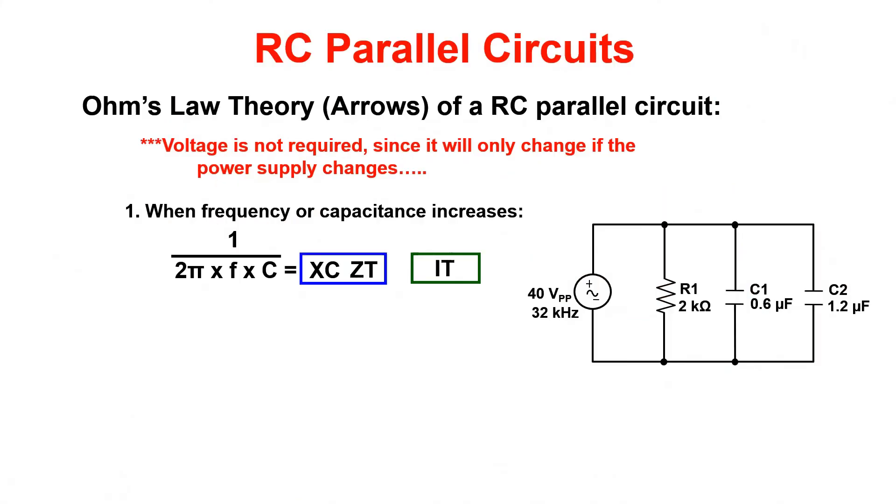Using Ohm's law we can determine what happens to an RC parallel circuit when frequency or capacitance changes. In a parallel circuit we know that voltage is constant.